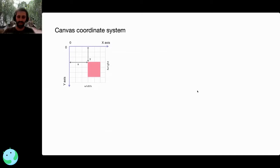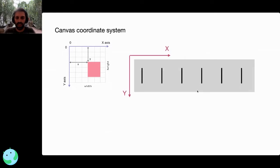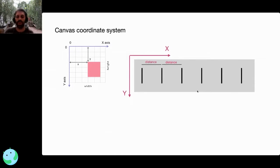The canvas coordinate system has two axes: the x-axis increases horizontally from left to right (or right to left depending on your system), and the y-axis goes from top to bottom. When we want to add something to our canvas, like vertical lines, we need to calculate the distance between them, because everything we draw into the canvas requires calculating its position, distance, and size.